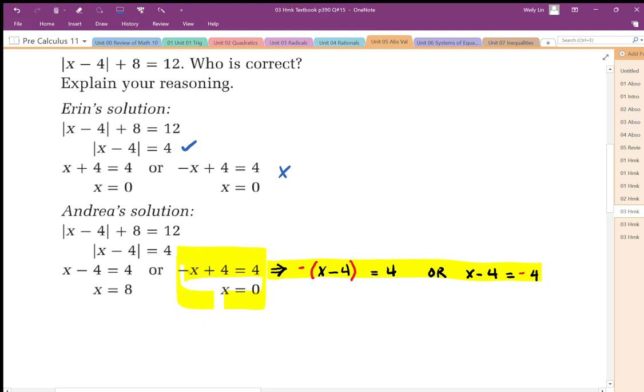So instead of x minus 4, she used negative x plus 4 equals 4. And that's essentially the same as taking brackets around that x minus 4 and using the negative version of that.